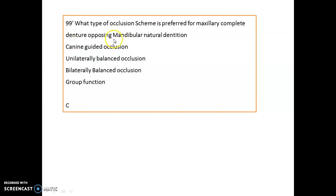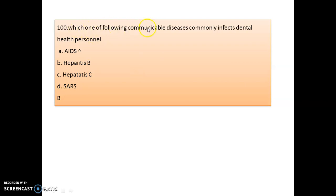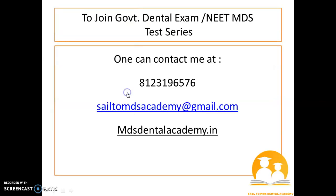What type of occlusion scheme is preferred for a maxillary complete denture opposing mandibular natural dentition? We always try for bilateral balanced occlusion whenever we are replacing any arch. Which communicable disease commonly infects dental health personnel? That is Hepatitis B. That was all for today — see you in the next session, and keep walking towards your goal of the government exam or MDS exam.